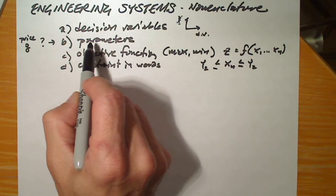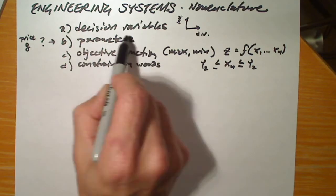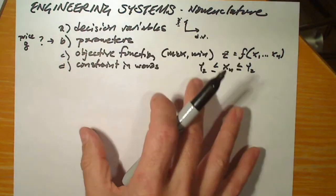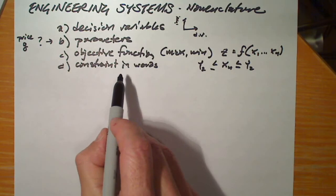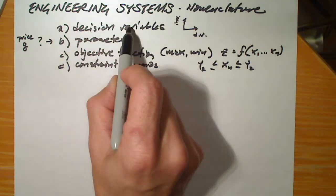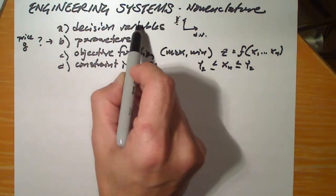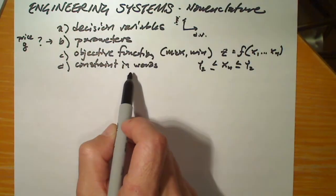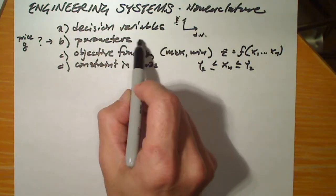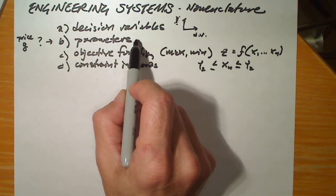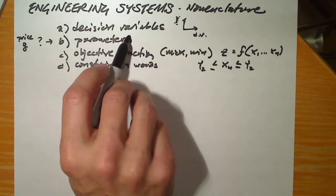But on Mars or on the Moon, of course, it would be different. And these are parameters that are outside our control, but nevertheless govern the relationship between the design variables and the objective function, or the design variables and the constraints. Parameters are outside our control. They're the aspects of the problem that we just have to accept as true.